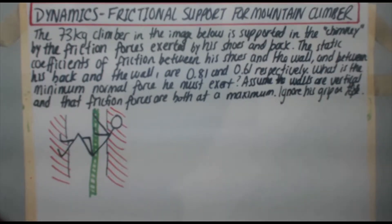The 73 kilogram climber in the image below is supported in the chimney by the friction forces exerted by his shoes and back. The static coefficients of friction between his shoes and the wall and between his back and the wall are 0.81 and 0.61 respectively.